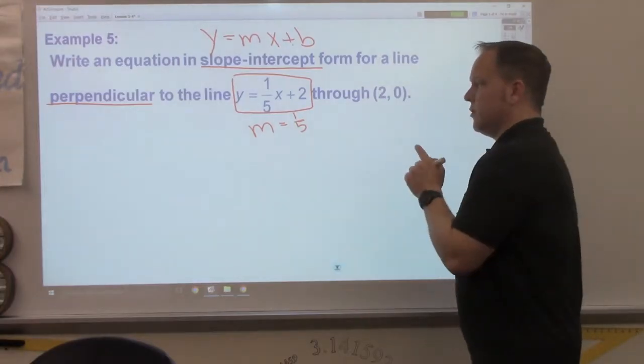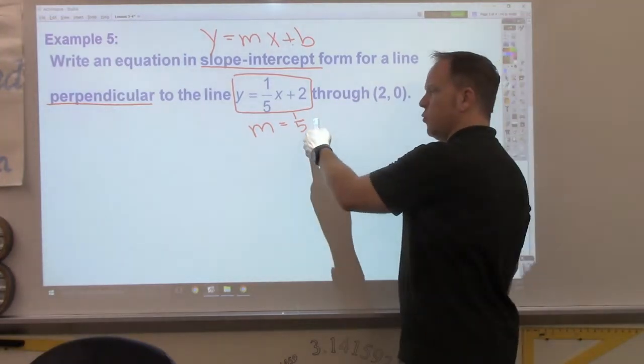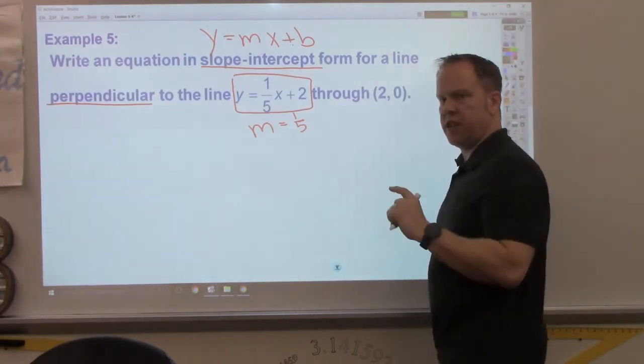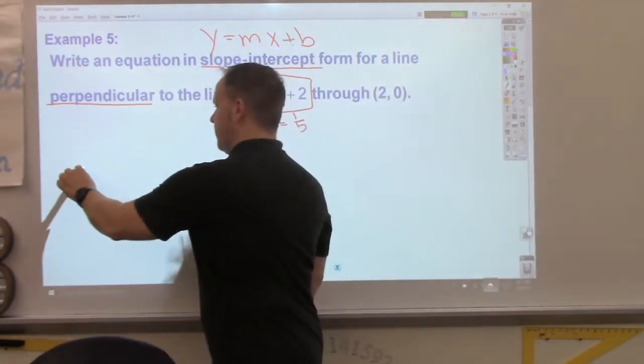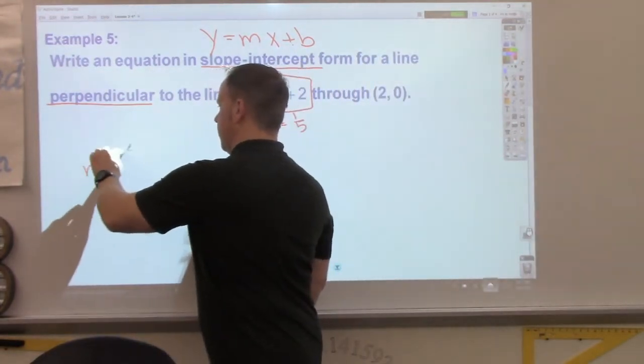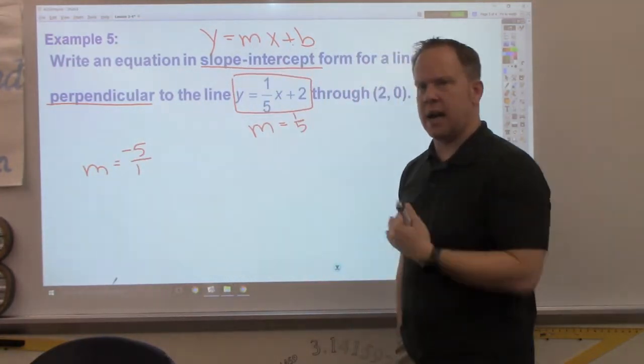Perpendicular lines. Slopes are opposite reciprocals. Good job, Hulk. Slopes of perpendicular lines are opposite reciprocals. So, I'm not going to use one-fifth. I'm going to use... Change of sign, flip it. Negative 5 over 1. So, my slope is going to be negative 5 over 1. If you want to put just negative 5, that's fine. I like to keep ratios.